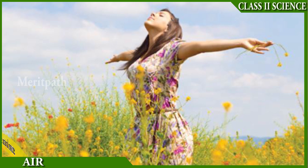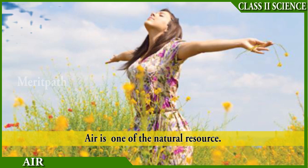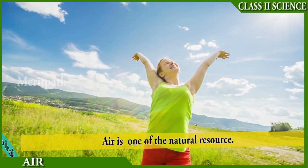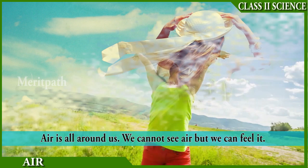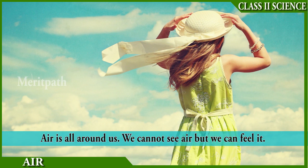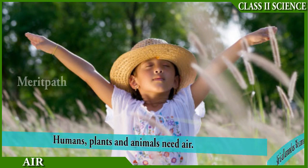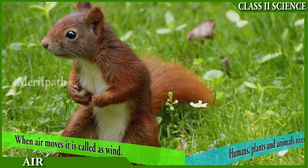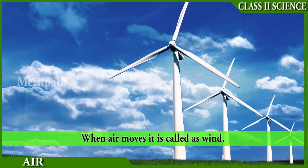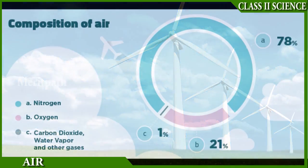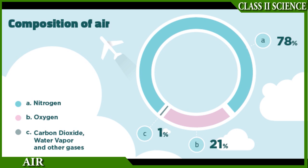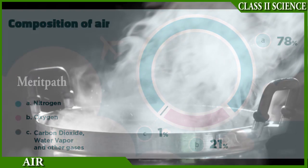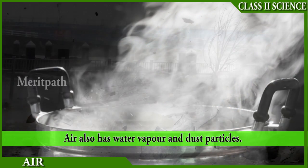Air is one of the natural resources from the environment. We cannot see or touch air, but it is always around us. Humans, plants, and animals need air to breathe. When air moves, it is called wind. There are many important gases present in air, like oxygen, carbon dioxide, and nitrogen. Air also has water vapor and dust particles.